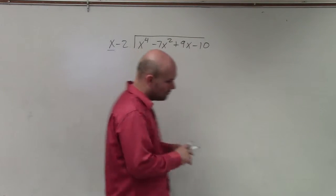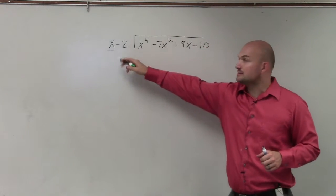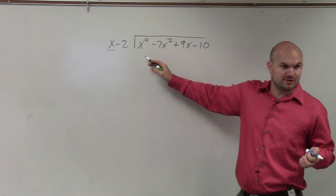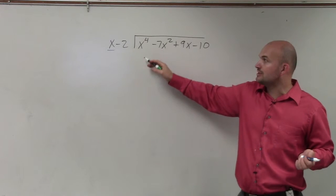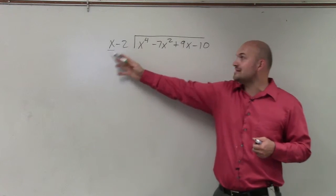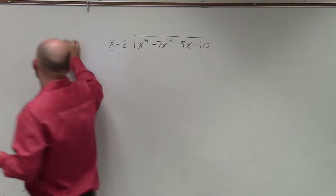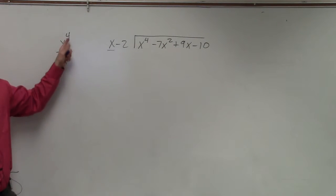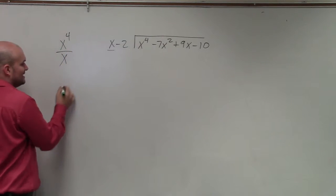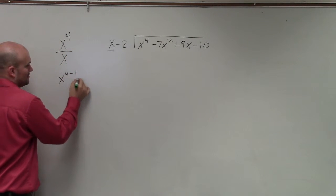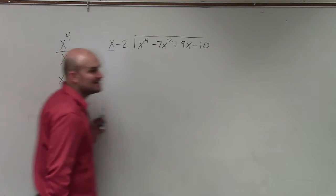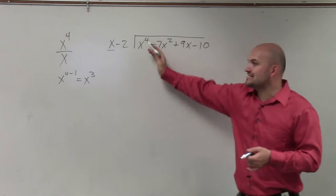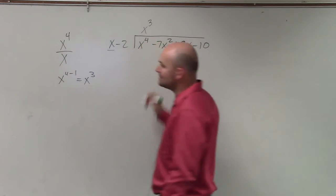When we divide, we're only going to divide by our x. So we say x divides into x to the fourth. If you don't understand how many times x divides into x to the fourth, just write it to the side. Using our rules of exponents, it goes in there x cubed times. Take your time with this.